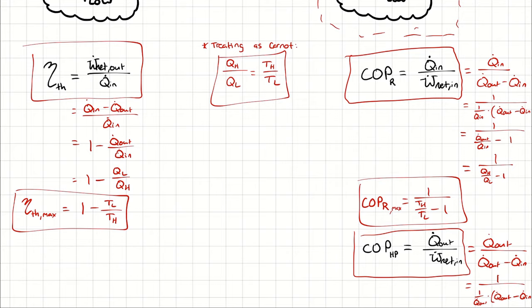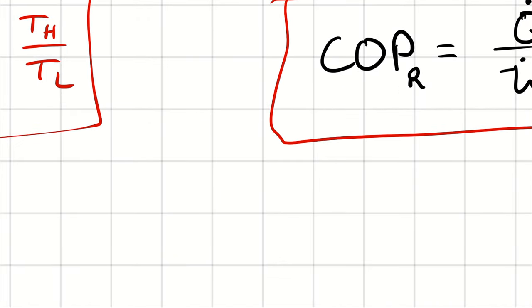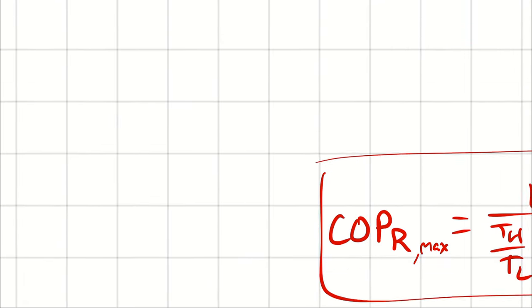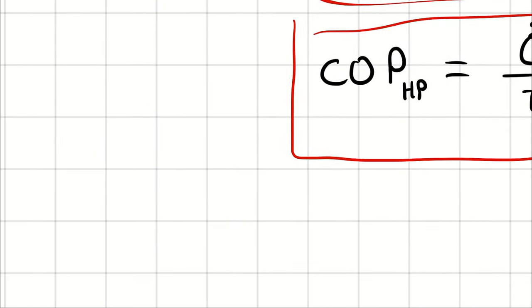The last thing I'll leave you with is that, depending on your textbook, you might see COP-R called beta and COP-HP called gamma. But COP is the ASHRAE standard for referring to those two parameters.